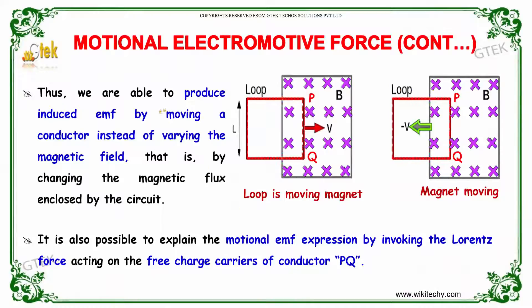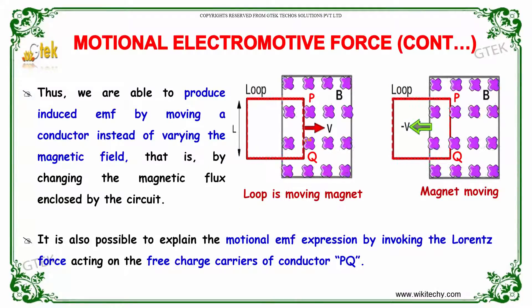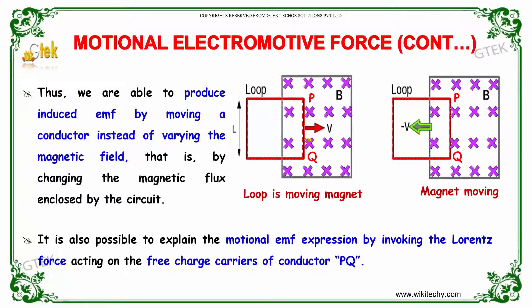Thus, we are able to produce induced EMF by moving a conductor or varying the magnetic field, that is by changing the magnetic flux enclosed by the circuit. It is also possible to explain the Motional EMF expression by invoking the Lorentz force acting on the free charge carriers of conductor PQ.